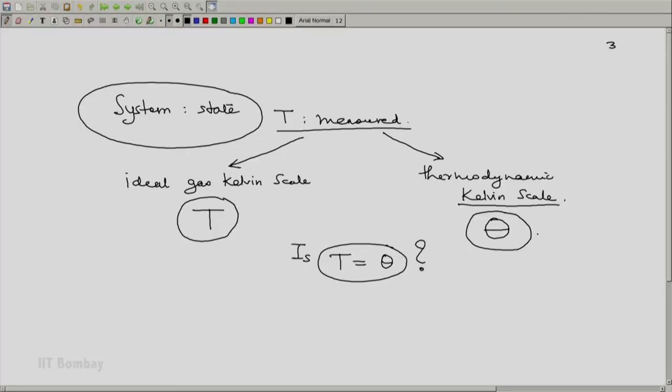We know that there is one temperature level, the triple point of water, where T is defined to be 273.16 Kelvin. Theta is also defined to be 273.16 Kelvin. But at other temperatures higher or lower, we do not know whether they will be equal or not. And till that question is resolved, which we will do in a few moments, let us say that we will be using the symbol theta whenever the temperature is measured on the thermodynamic Kelvin scale. And we will be using the symbol T when the temperature is measured using the ideal gas Kelvin scale.